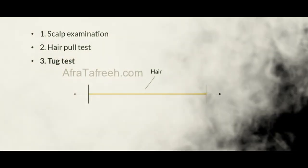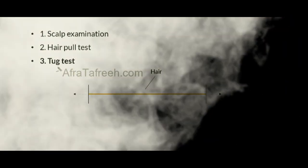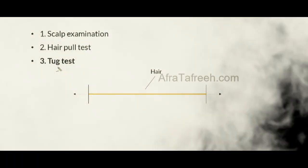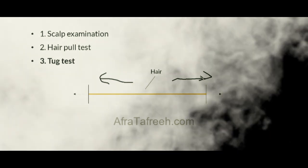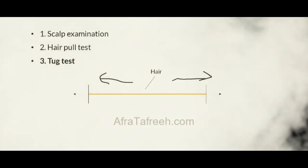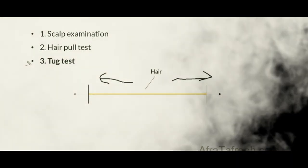For completeness, the third physical exam component is the tug test. The physician grasps a single hair from both ends and pulls gently on both sides simultaneously, stretching it out in either direction. If the hair breaks, the patient has a positive tug test, indicating that the hair is weak, brittle, or lacking integrity. In summary, the three major components are: the scalp examination (looking for inflammation and distribution), the hair pull test (looking for active shedding), and the tug test (testing individual hair integrity).